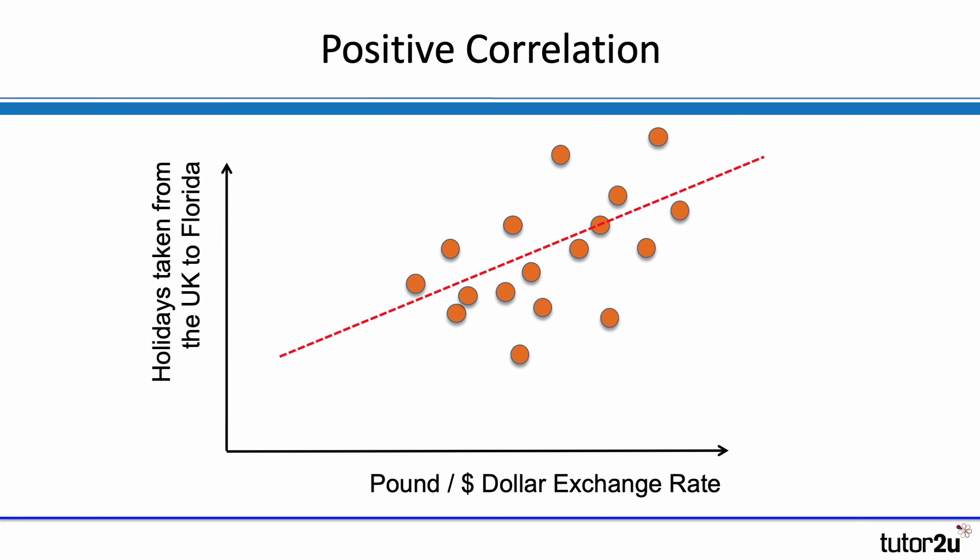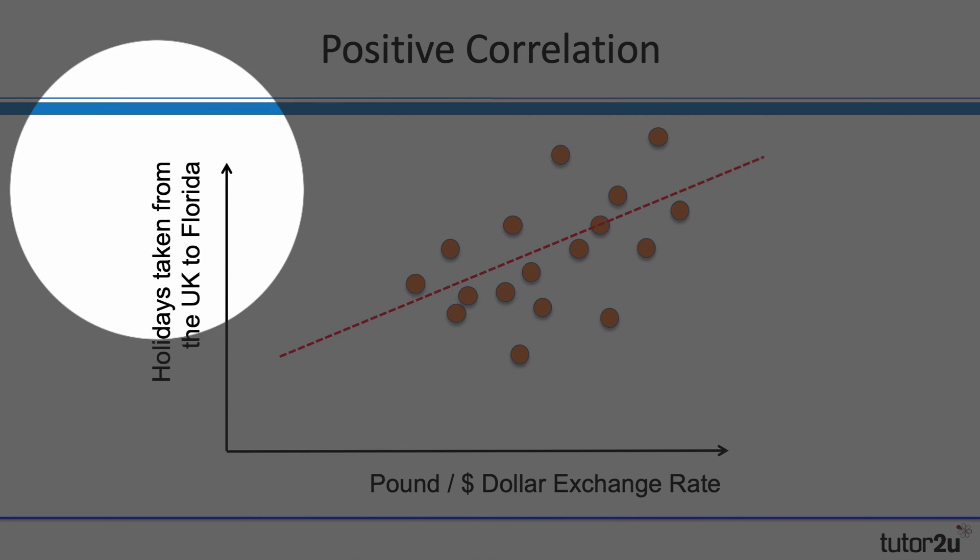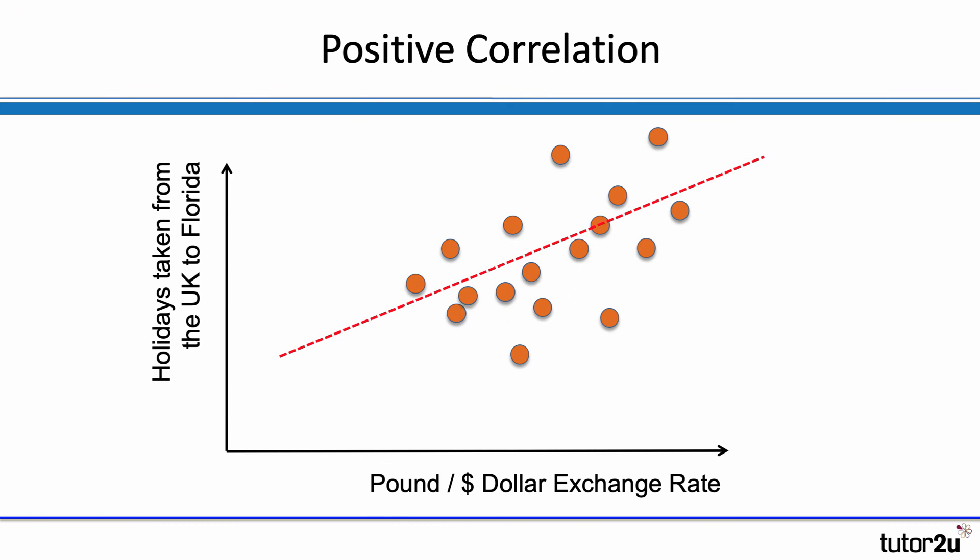In this case, this chart shows the pound/dollar exchange rate, which is our independent variable on the x-axis. And as that increases, so too does the number of holidays that people take from the UK to Florida. We would expect that to be the case because as the pound gets stronger and the exchange rate increases, that makes overseas holidays more affordable — your pound goes further in Florida, at Disneyland, MGM Studios, and the rest. It looks like there's a positive correlation there.